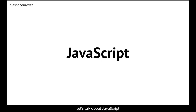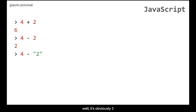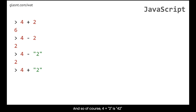Let's talk about JavaScript. In JavaScript, what is 4 plus 2? Well, it's 6. What is 4 minus 2? Well, it's obviously 2. What is 4 minus the string 2? It's 2. And so of course 4 plus the string 2 is 42.